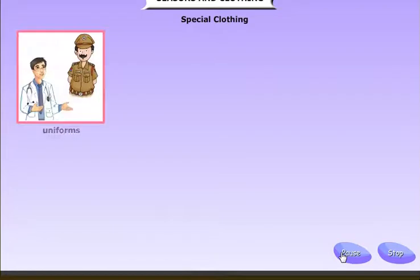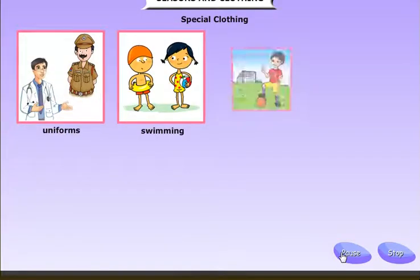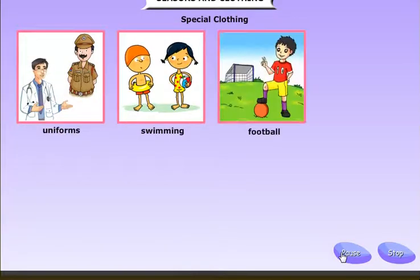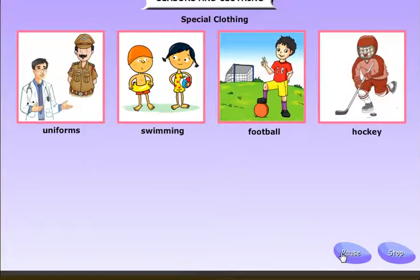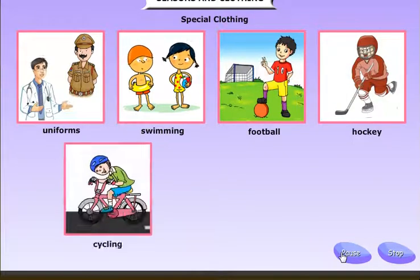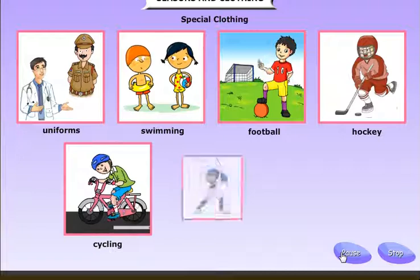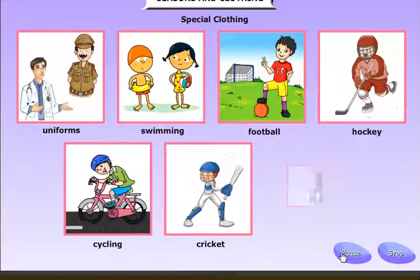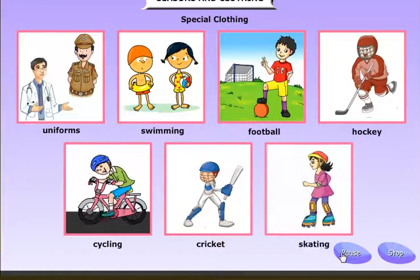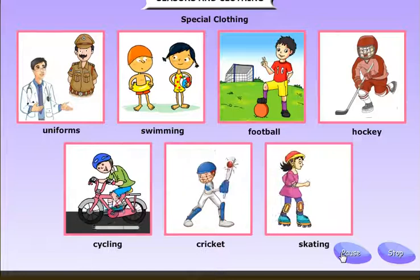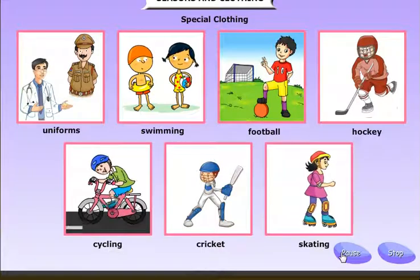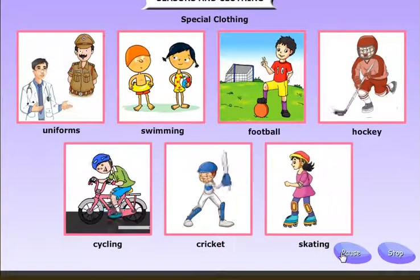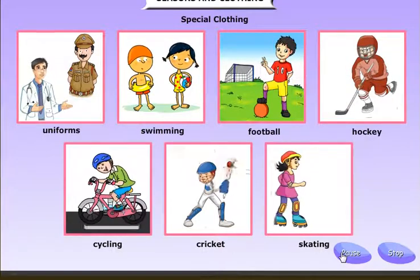Some people need special clothes for their work. Policemen, firemen, nurses, and doctors need special clothing called uniforms. Children also wear uniforms to school. Each sport has its own special clothing - swimming, football, hockey, cycling, cricket, and skating all have different kinds of clothing.